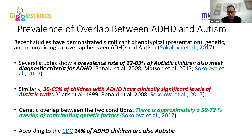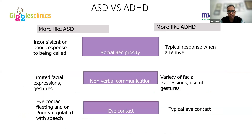Nowadays, we talk more about epigenetics than genetics — how your environment influences genetic expression. Epigenetic factors have been found to contribute to the overlapping pictures of ADHD and autism, including the effect of the environment on gene expression and gut microbiota. This is a very important slide from a clinical point of view.